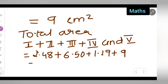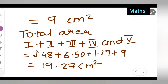After adding all the parts: 2.48 + 6.5 + 1.29 + 9 = 19.27 centimeters square. So the total area of the paper used is 19.27 centimeters square.